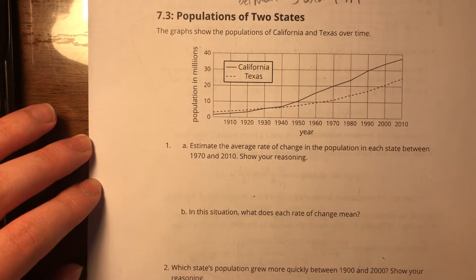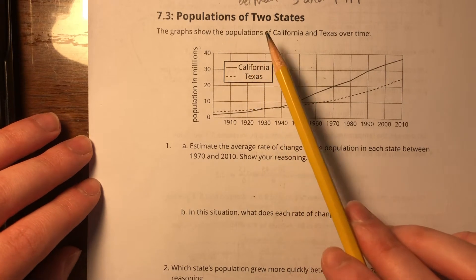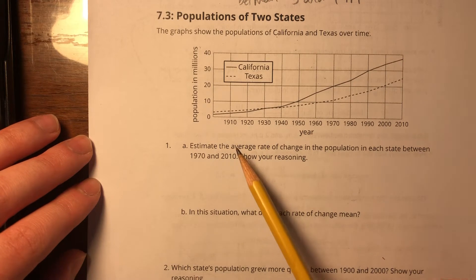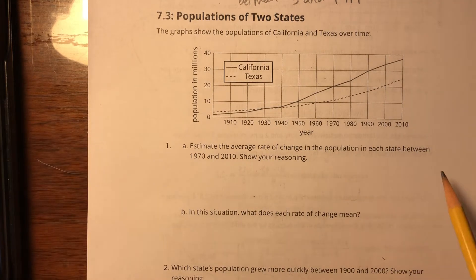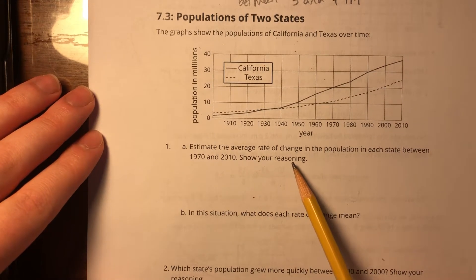7.3 populations of two states. The graphs show the populations of California and Texas over time. Estimate the average rate of change in the population in each state between 1970 and 2010. Show your reasoning.